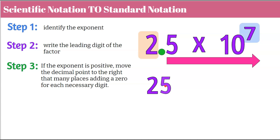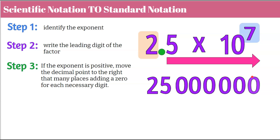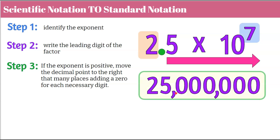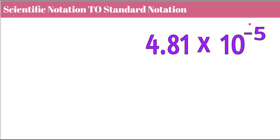Moving the decimal 7 places to the right: 1, 2, 3, 4, 5, 6, 7, then place the decimal. We don't need that decimal point — it's just a placeholder. Remove it and add a comma every three digits from the left. So 25 million represents 2.5 multiplied by 10 to the 7th. Standard form equals scientific notation.